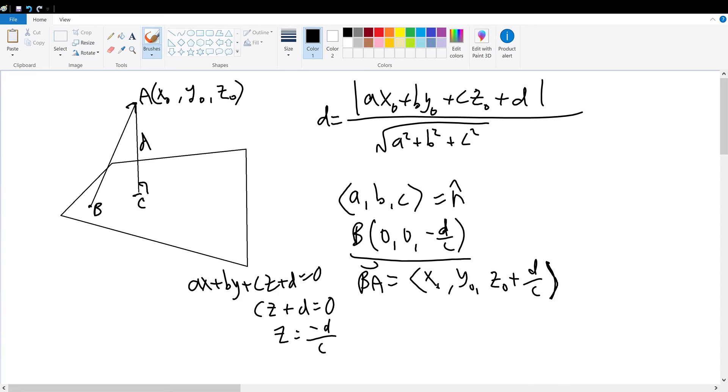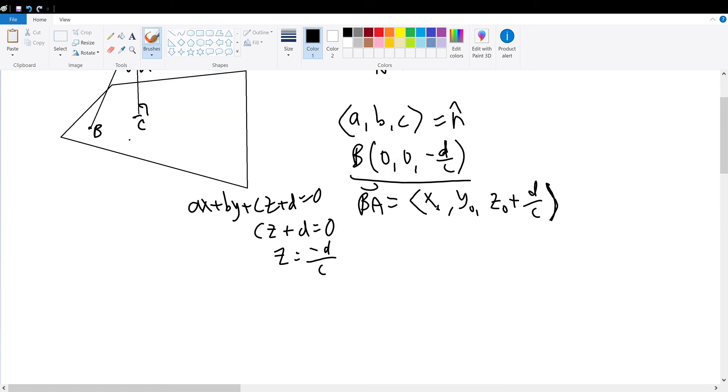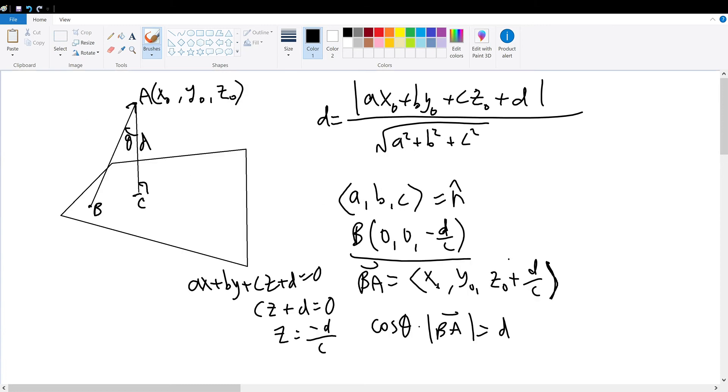Then, we can define angle BAC to be theta, where the cosine of theta times BA vector's magnitude will result in the distance. We know this because triangle BAC is a right triangle. If I connect the two points B and C to get the segment BC, we can see that the hypotenuse's magnitude, which is BA vector's magnitude, times the cosine of theta defined at angle BAC will result in the distance.